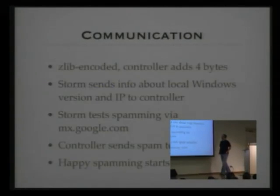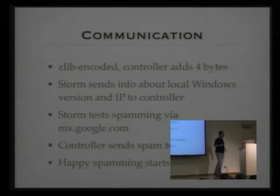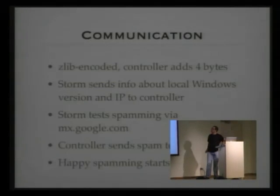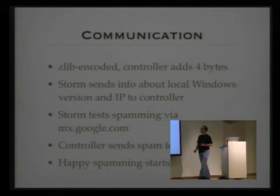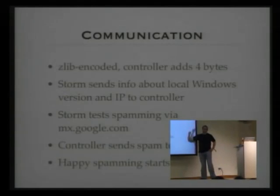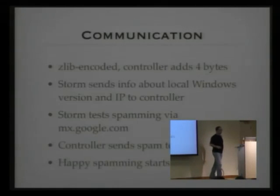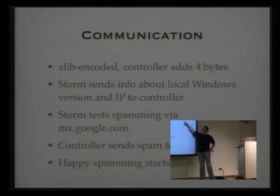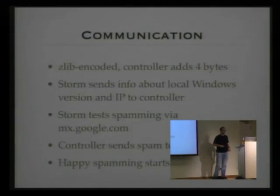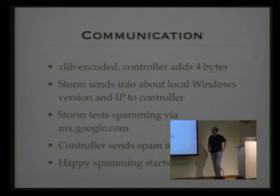For the actual communication afterwards, they use Zlib — a zip library — to compress the communication. Nothing fancy; you can decrypt this with just a couple of lines in Python. Storm sends information about the local Windows version and IP to the controller, tests spamming via mxgoogle.com, and then receives the spam template and starts spamming. So the actual Storm overlay network built on top of Overnet is rather simple.